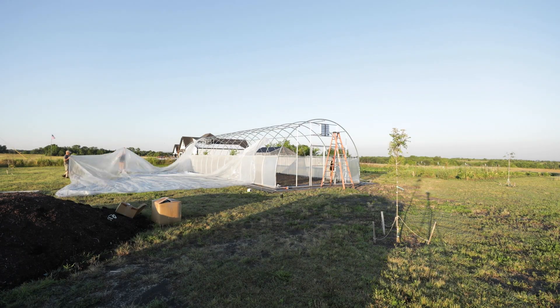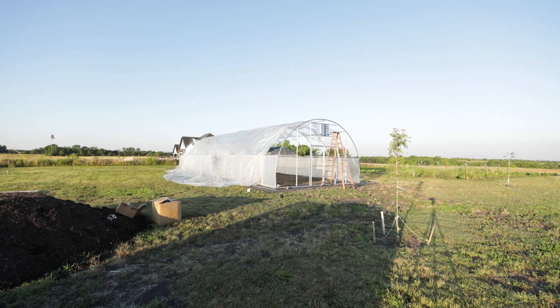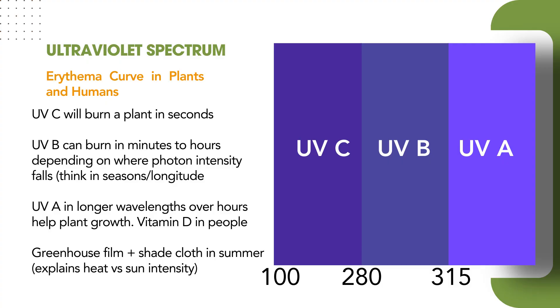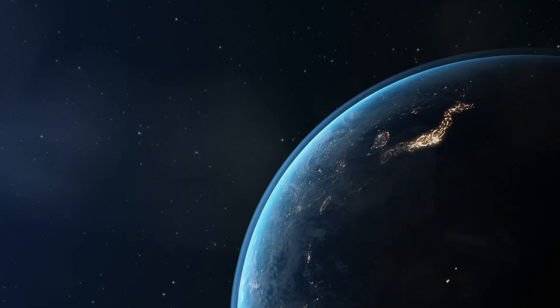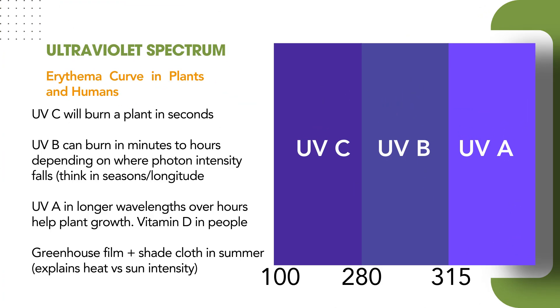To put that in bigger perspective: at the UVC level where the wavelengths are the shortest and therefore the most intense, plants and people can sunburn within a matter of seconds. That's why the Earth's atmosphere blocking that is really protecting everything under the sun. UVB can burn in minutes to hours depending on where the photon intensity falls within that nanometer range — this can also be thought of as seasons. It's going to be more intense in summer, and the further south we go in the northern hemisphere, or further north in the southern hemisphere, toward the equator where the sun is most intense, those UV spectrums have variables. So I can't tell you exactly what nanometer range it'll be on your farm — seasonality, clouds, weather all come into play.